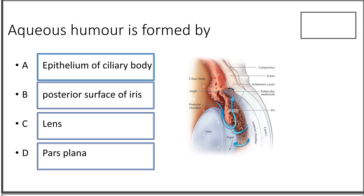Eleventh question: aqueous humor is formed by the epithelium of the ciliary body, posterior surface of the iris, lens, or pars plana? The answer is the epithelium of the ciliary body.